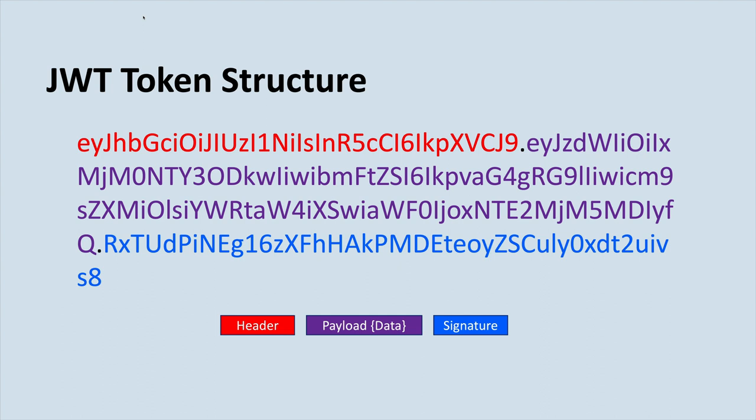If the signature doesn't match the header and payload, the service knows it was tampered with. You might wonder: why can't a user just recompute a new signature after changing the payload? They could, but the key used to create the signature would be different — they're not the security service. The service trying to verify the signature will use the same key that was used to sign it, which only the security service holds. If the user doesn't have that key, their forged signature won't match.